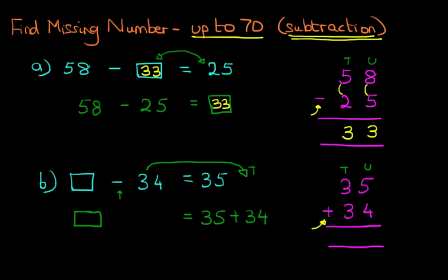Starting on the right-hand side, 5 plus 4. 5 plus 4 is 9. Now, the tens. We've got 3 plus 3. The answer is 6. So, therefore, the missing number is 69.